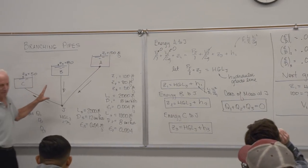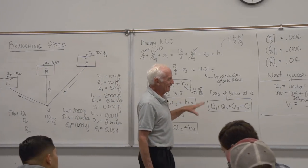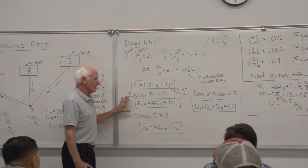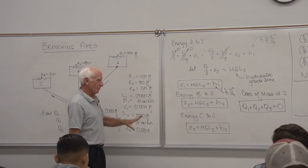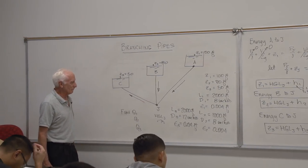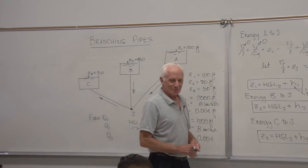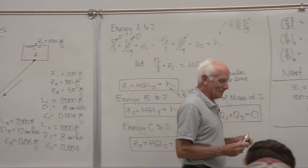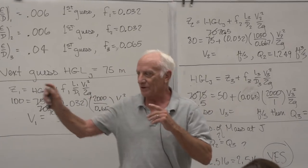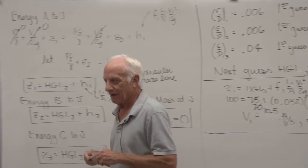Those are called branching pipes — a more difficult class of problems. The key is four equations for four unknowns, and we just went through an example of how to solve them. We've finished Chapter 6. We're going to start with pumps next time. Homework is due on the front desk today. See you Friday.